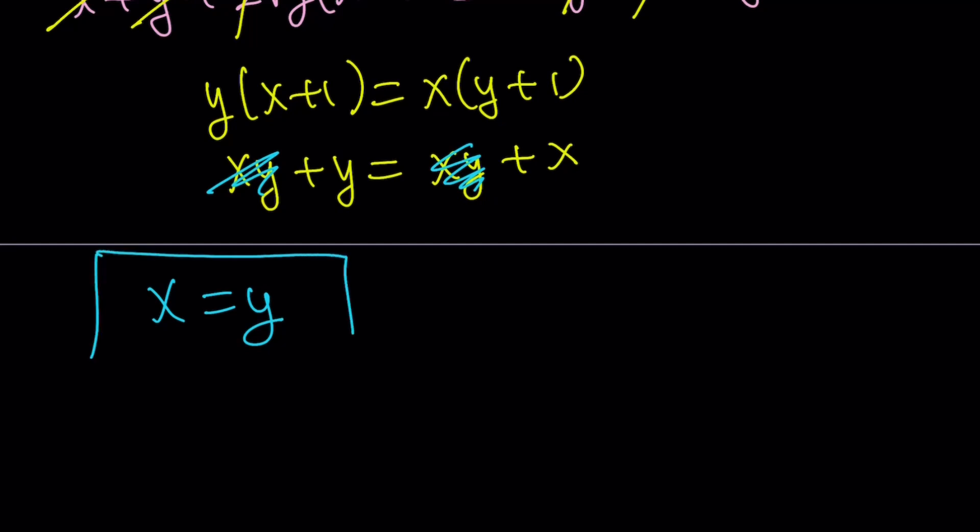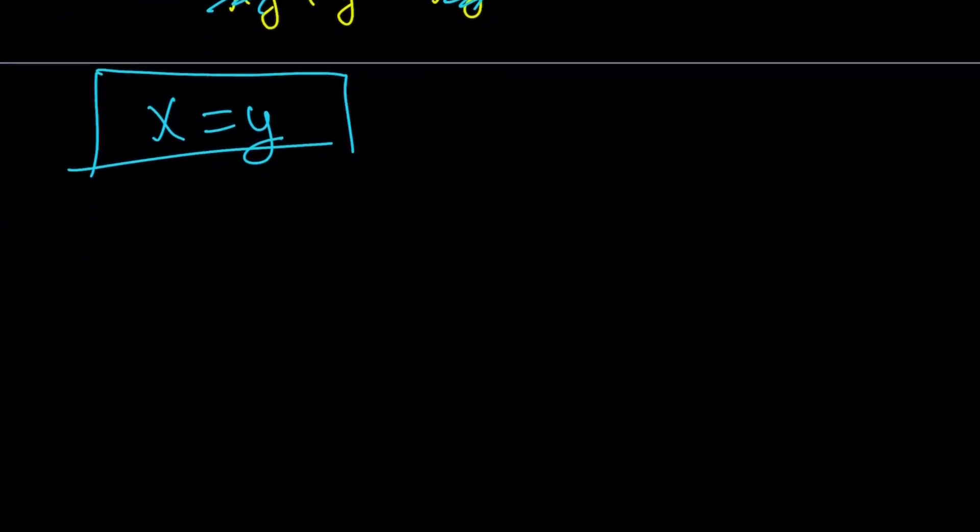So x equals y is something that can be used in one of the equations. I'll use the first one. So let me rewrite the first equation. Square root of x plus square root of y plus 1 equals 1. Now, I'm going to replace y with x. You can also replace x with y. It doesn't matter. You get the same thing. But I just like replacing y with x so that I can get an equation in terms of x. So if you replace y with x, you get square root of x plus the square root of x plus 1 equals 1. Again, we can square both sides.